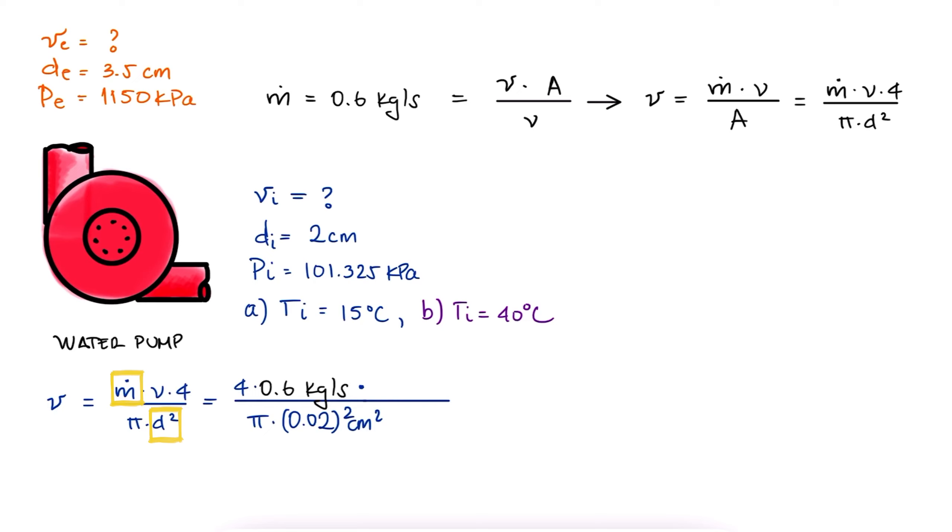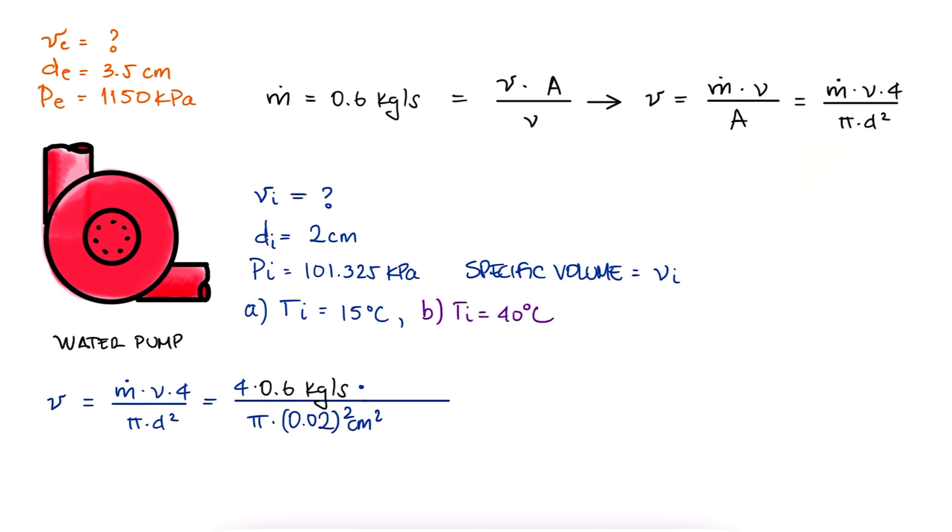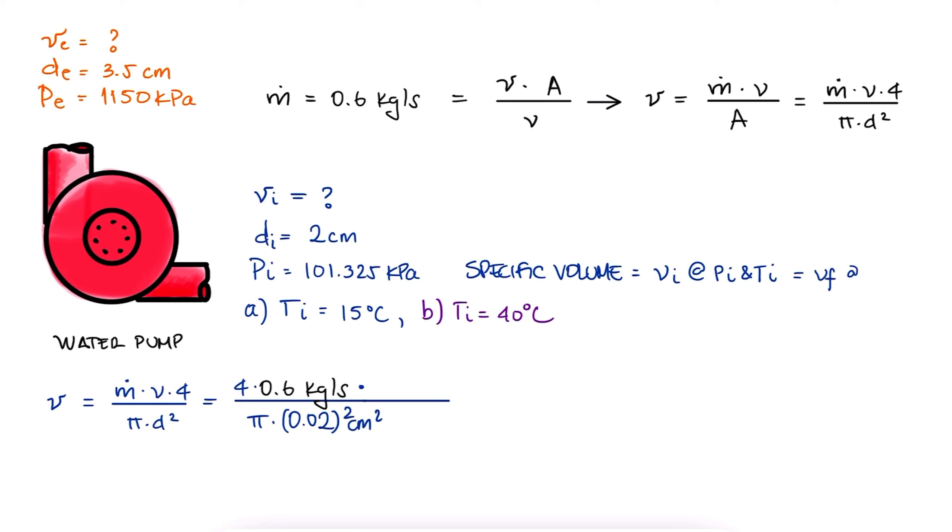We need the specific volume of compressed liquid water at 15 degrees Celsius. We make use of what we learned in the compressed liquid properties main lecture video to state that the specific volume of compressed water at a specific pressure and temperature can be assumed to be the specific volume of a saturated liquid at that temperature, meaning VF at 15 degrees Celsius.